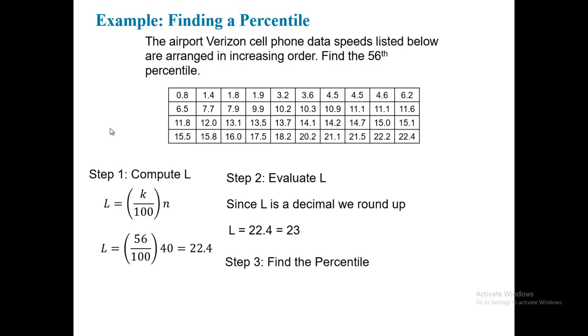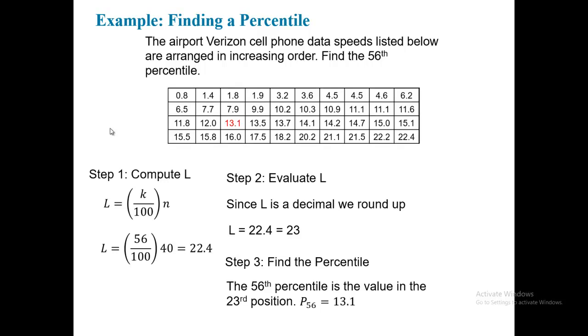Next, we'll find the percentile. The percentile will be the value of the 23rd data point. The value of the 23rd data point is 13.1, and that serves as the 56th percentile.